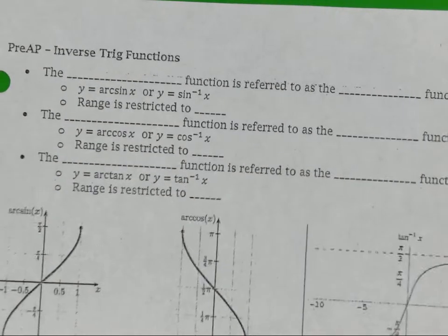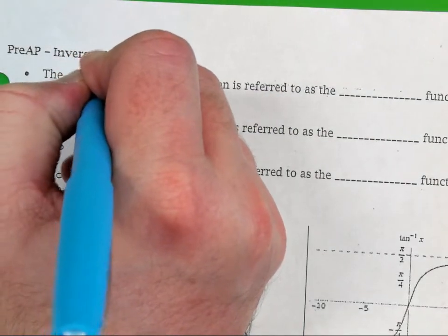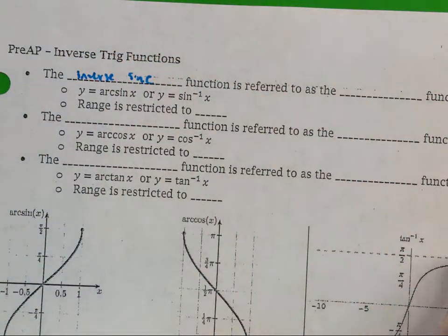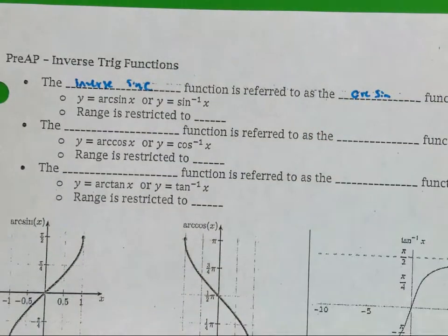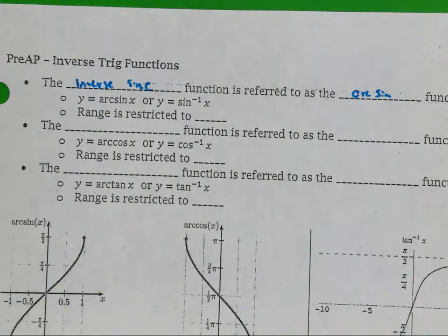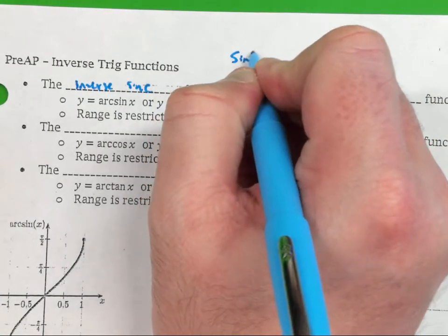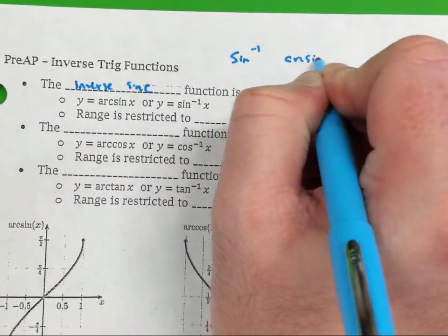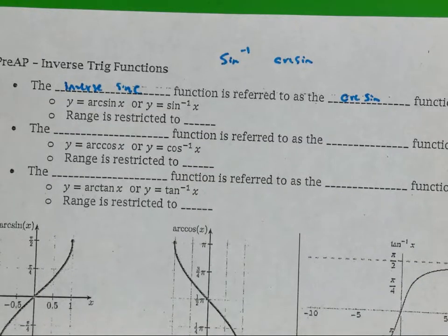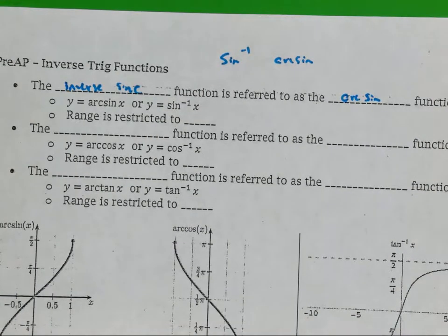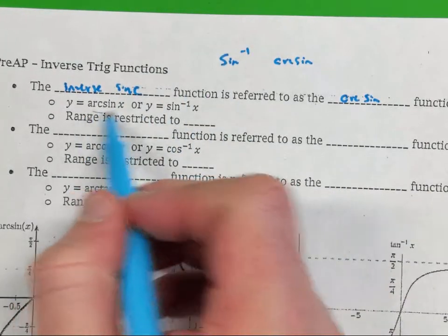This first blank: the inverse sine function is referred to as the arcsine function — a-r-c-s-i-n, arcsine. You will see inverse sine written in that notation or as sine raised to the negative one — it means the same thing. Just like f raised to negative one meant inverse, sine raised to negative one does not mean one-over-sine; it means inverse.